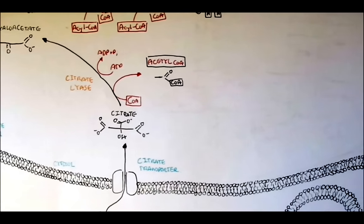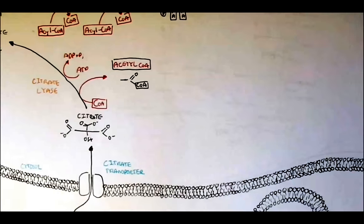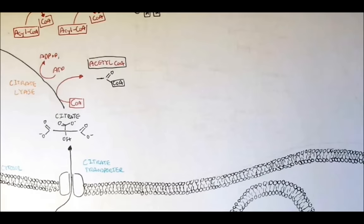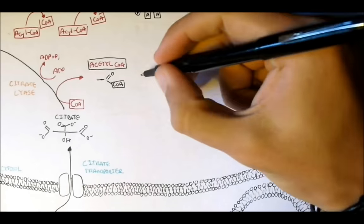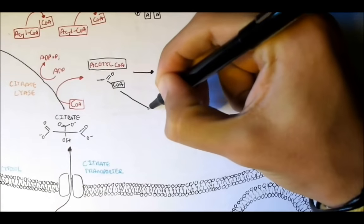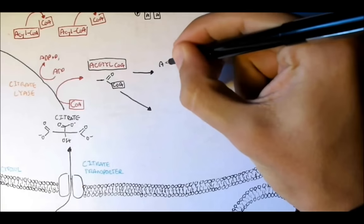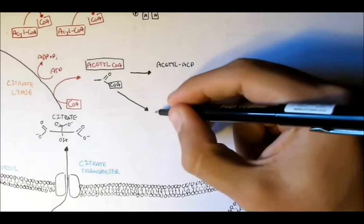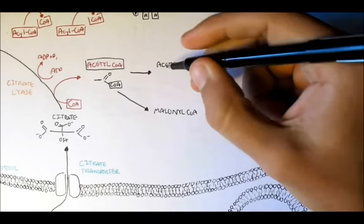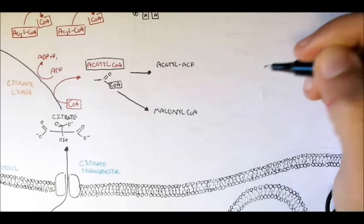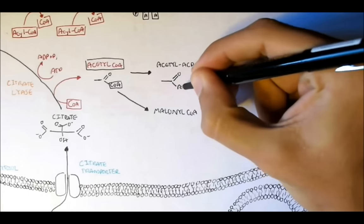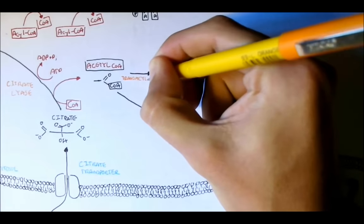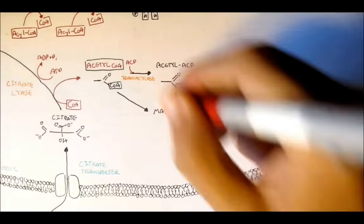Back to the map — fatty acid synthesis begins with acetyl-CoA, which is now in the cytosol. Acetyl-CoA can either convert to acetyl-ACP or malonyl-CoA. Acetyl-ACP is acetyl-CoA with the CoA exchanged for ACP — acyl-carrier protein. Acetyl-CoA converts to acetyl-ACP by the enzyme transacetylase.